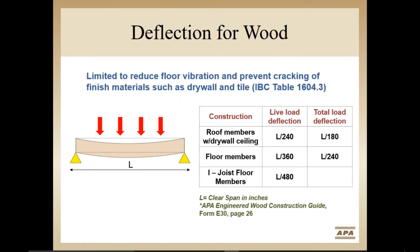The codes do not differentiate by product type. The table shown here gives typical deflection limits for floor and roof members. The floor and roof member deflection limits are specified in the building codes. The L/480 limitation for I-joist floor members has been adopted by the industry to provide better deflection performance for the longer spans made possible by I-joist floor systems. I-joist floors are designed to a higher level of performance to ensure occupant satisfaction.